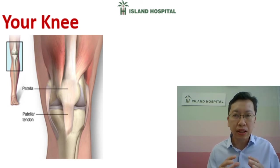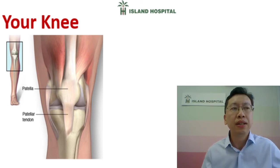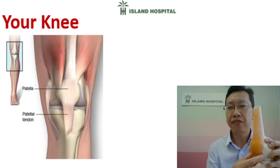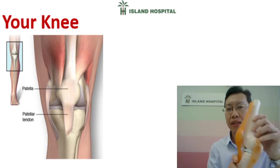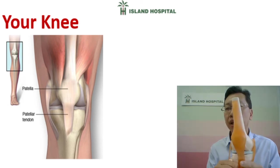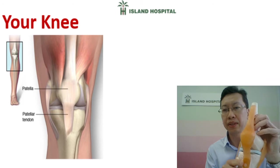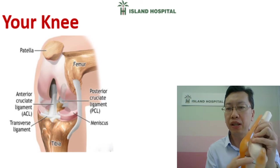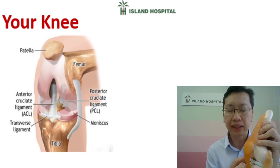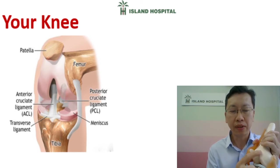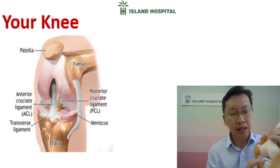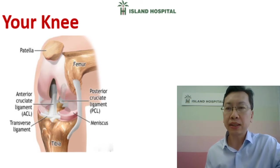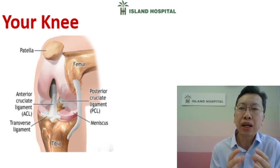Let me talk about the anatomy or structure of our knee. I have a knee model here. At the front is our kneecap. When we move our knee, we have ligaments to hold our knees together. In between the knees, we have a layer of soft bone called the meniscus. And at the end of the bones, we have a layer of cartilage — both at the top and bottom — which acts like a cushion or shock absorber to protect the joints.